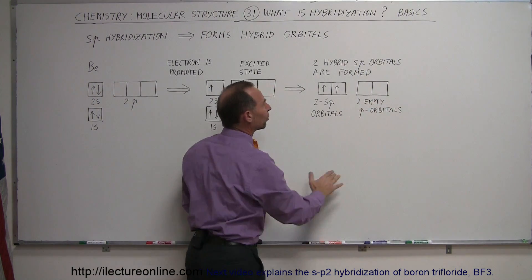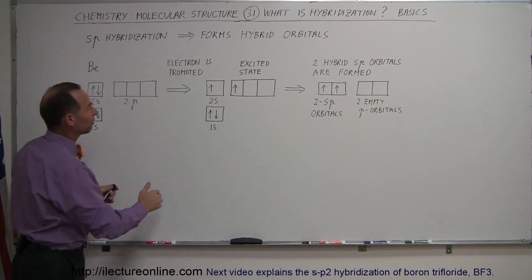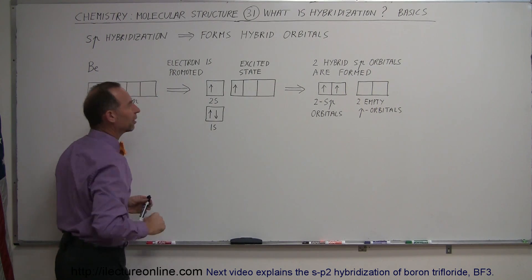Then, of course, we still have two empty p orbitals that are not being involved in the process because they did not have any electrons in there to begin with.